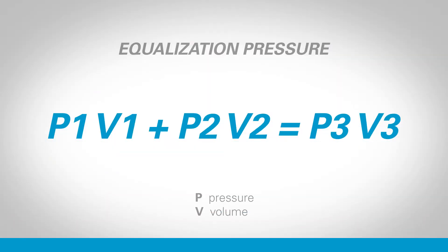Simplifying that process and assuming the temperature remains constant throughout, we can reduce the steps down to a very simple operation: Pressure 1 times Volume 1, plus Pressure 2 times Volume 2, equals the total pressure times the total volume.